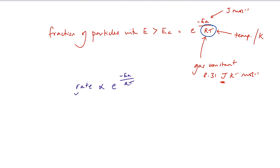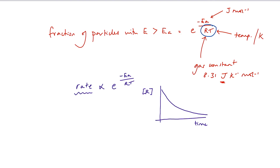The thing about rate is that during a reaction it changes. We know that because if we were to measure the concentration of a reactant over time, we would see that as the reaction proceeds the reactant gets used up, and the rate — the gradient of our curve — decreases. The rate is slowing down.